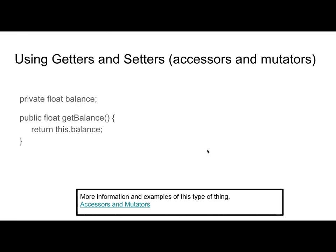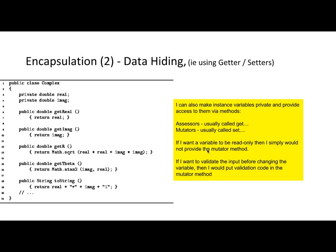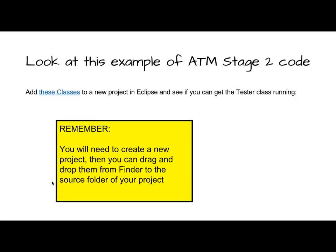This is what a getter and a setter looks like. There are lots of examples of this in our notes. Encapsulation, which is one of our key concepts, is making variables private and providing these methods to get, i.e. access, and set, i.e. change those variables.